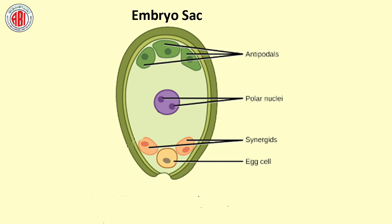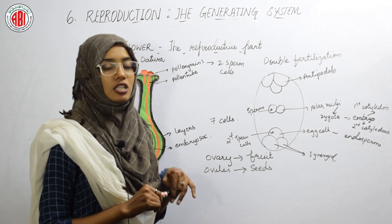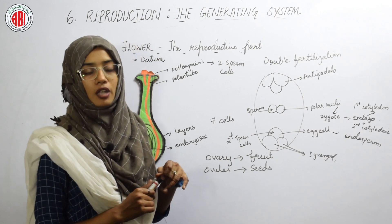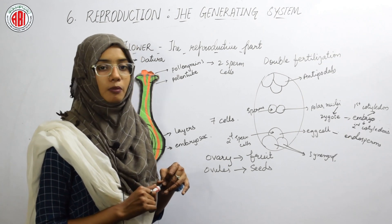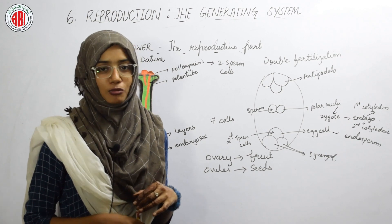The flower is the main reproductive part present in plants and is responsible for carrying out sexual reproduction. That's all for today. Thank you.